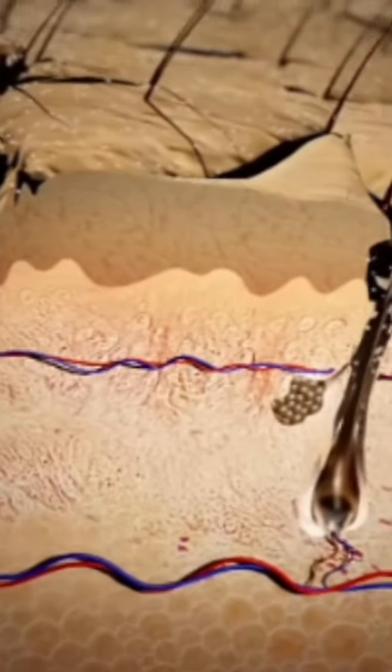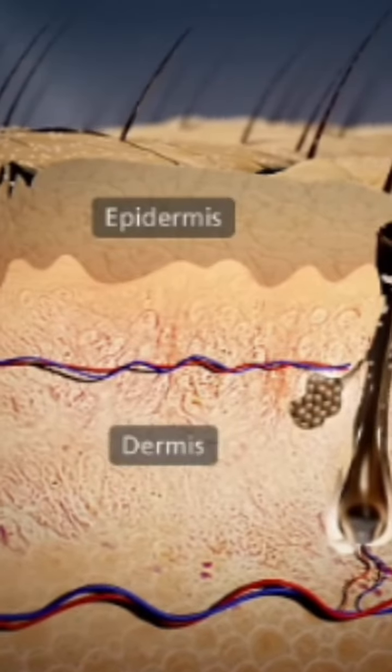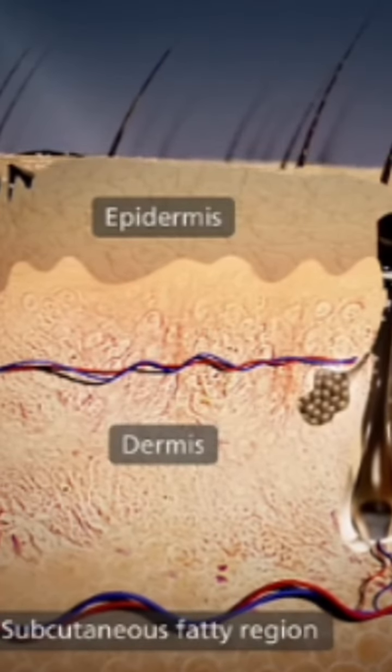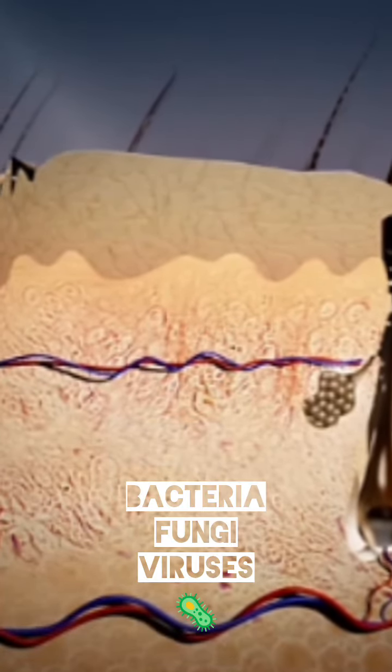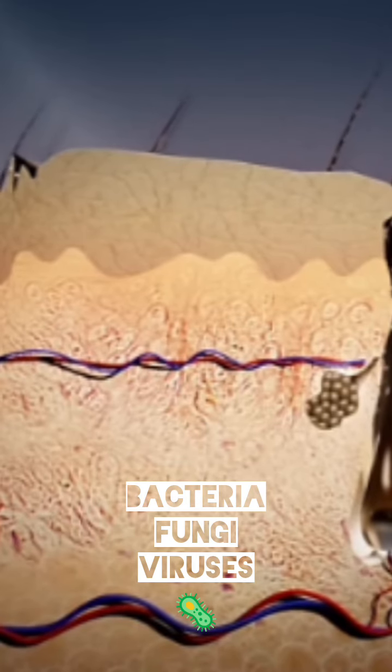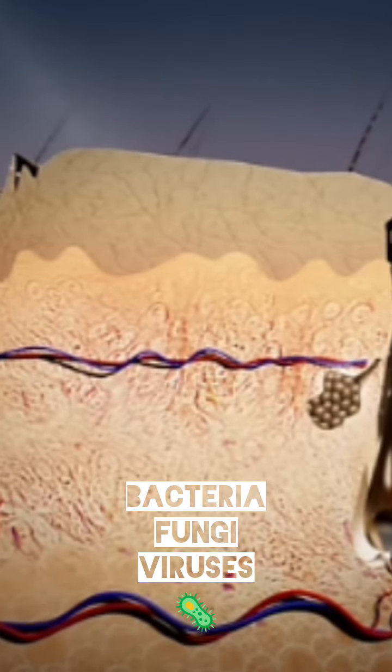The skin is composed of epidermis, dermis and a subcutaneous fatty region. Commensal bacteria, fungi and viruses living on the skin have beneficial effects in the protection against pathogens and in wound healing.